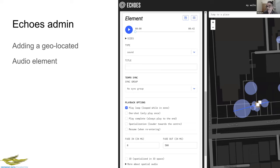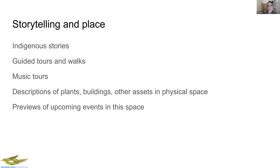The interface is quite simple. You draw a circle on a map, then upload the file you want to play when people walk inside that circle. These are the sorts of things we delivered inside the digital exemplar as part of the fellowship.